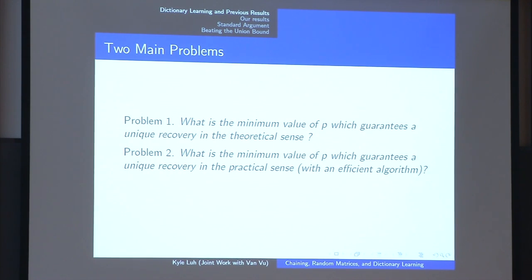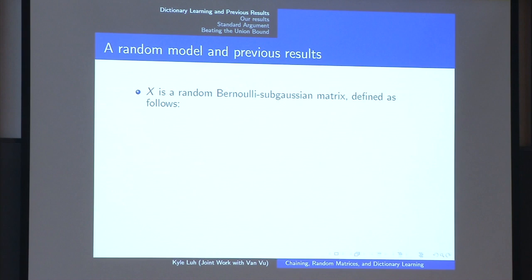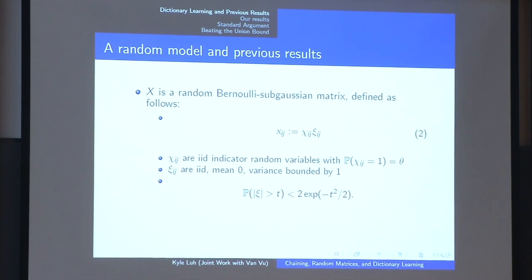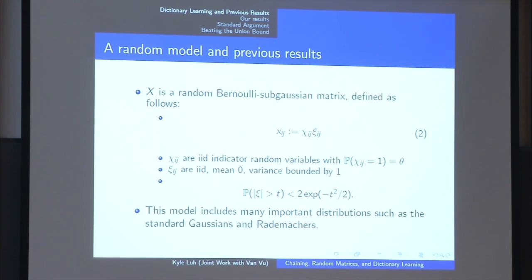And for all the computer scientists in the room, the natural next question is whether there's an efficient algorithm to find this reconstruction. We'll follow Spielman, Wang, and Wright's footsteps and work with the random model for the observation matrix: every entry of X is a Bernoulli sub-Gaussian random variable — the product of a sub-Gaussian random variable and an indicator random variable. The indicator basically zeros out entries of the matrix, and we let theta denote the expectation, so theta represents the sparsity. We assume mean zero and variance one sub-Gaussian. All your heavy-hitting random variables show up: Gaussians, Rademachers, and most everyday random variables fit this model.